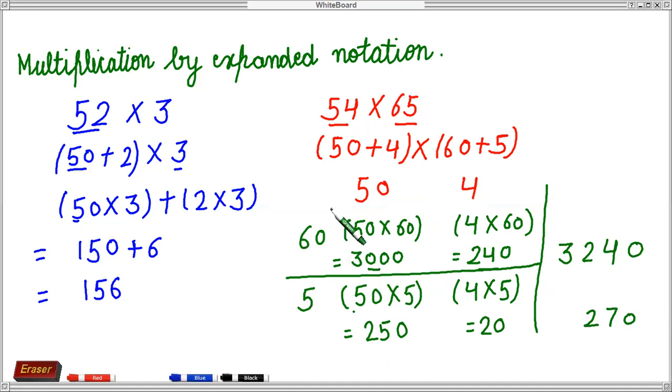Now between 60 and 5 also there was a plus sign, 60 plus 5. So whatever the answer has come in this line, that also we have to add. So the answer will be 0 and this 11, 1 carry, 2 plus 1, 3 plus 2 is 5 and it is 3. So the answer is 3510.